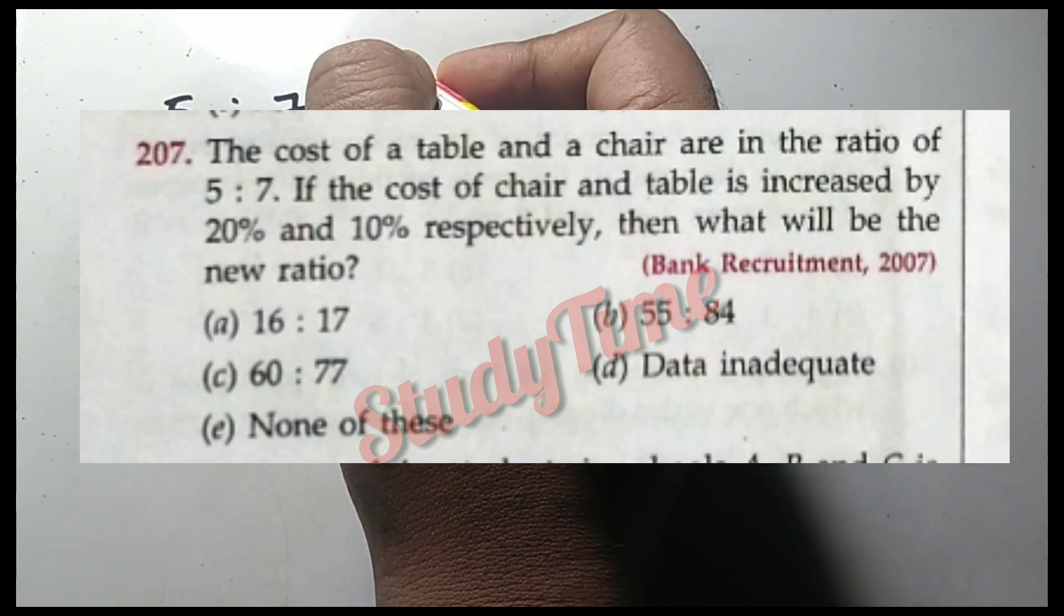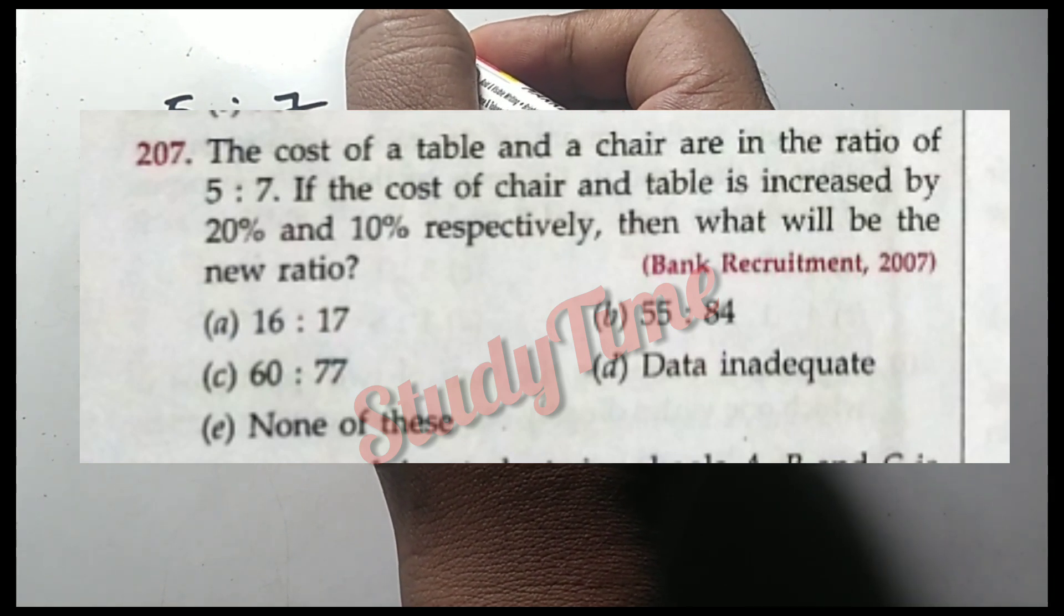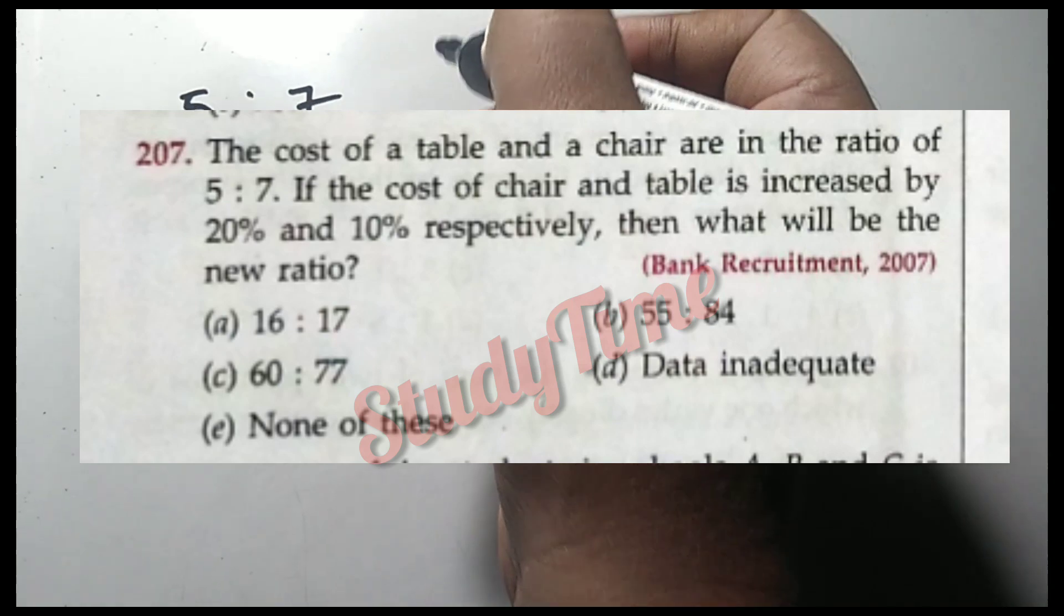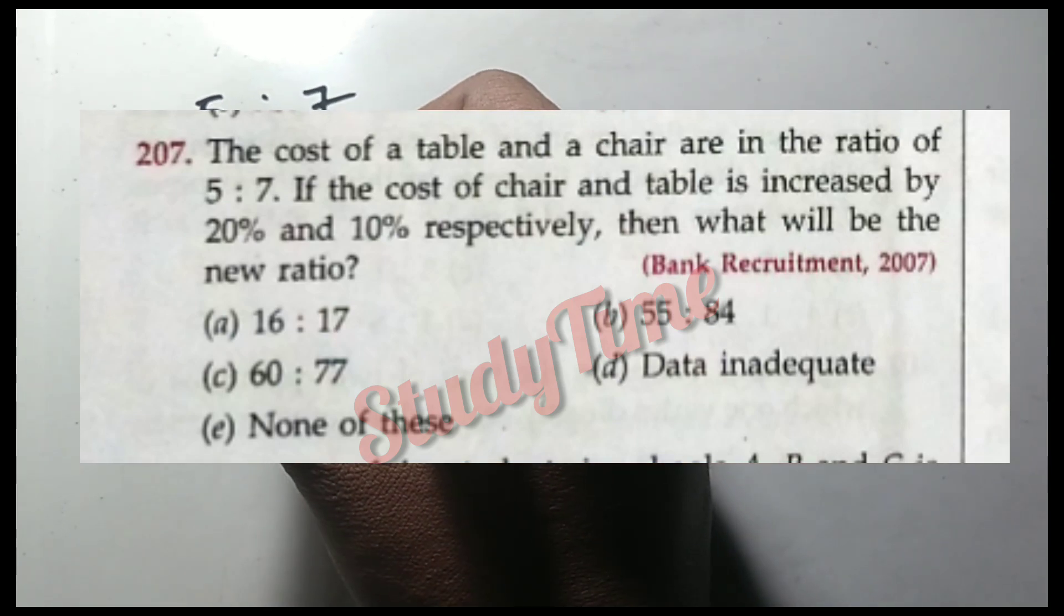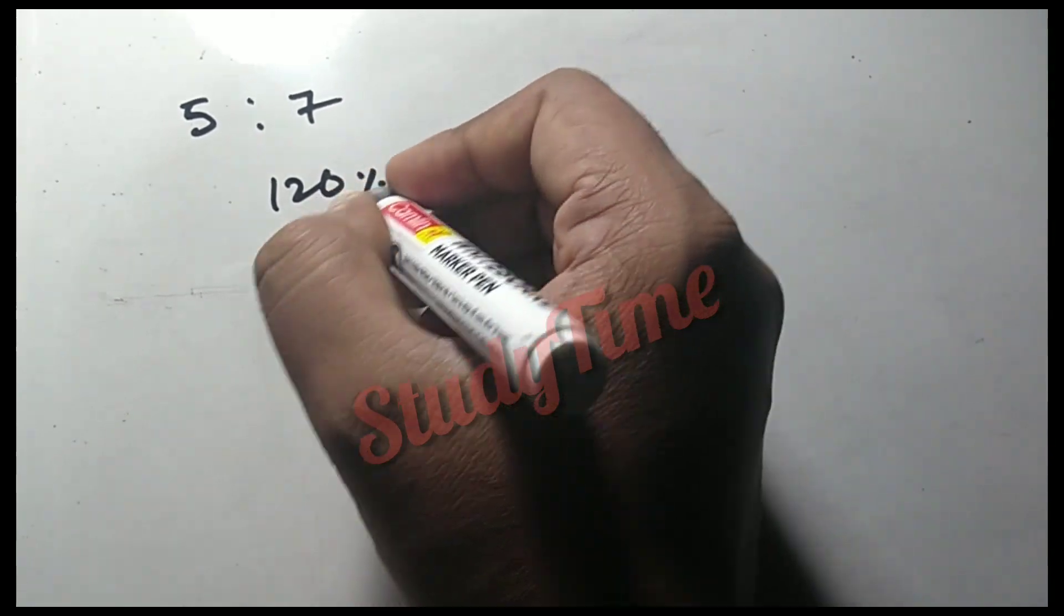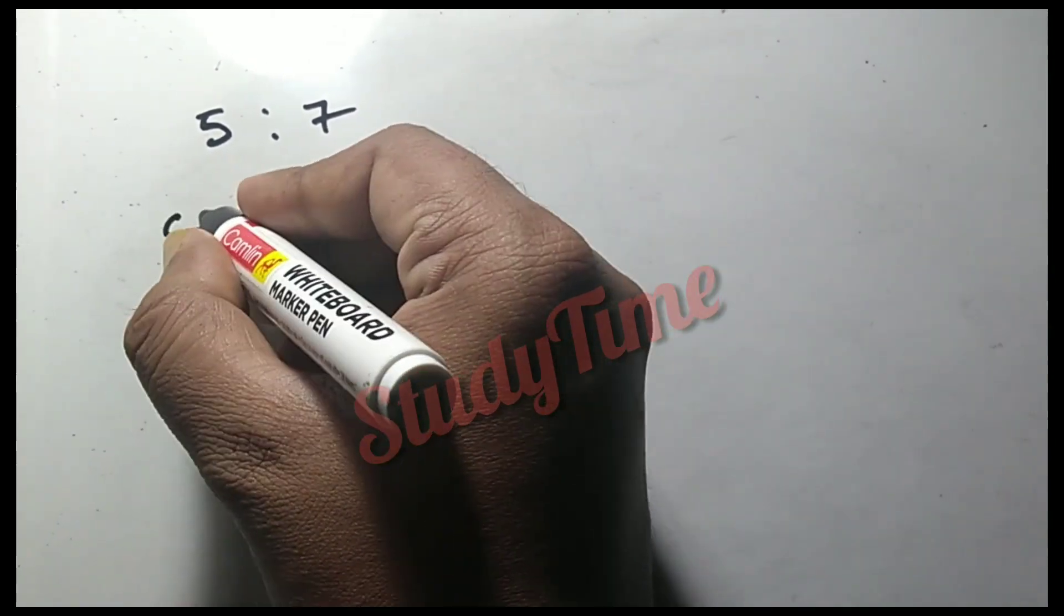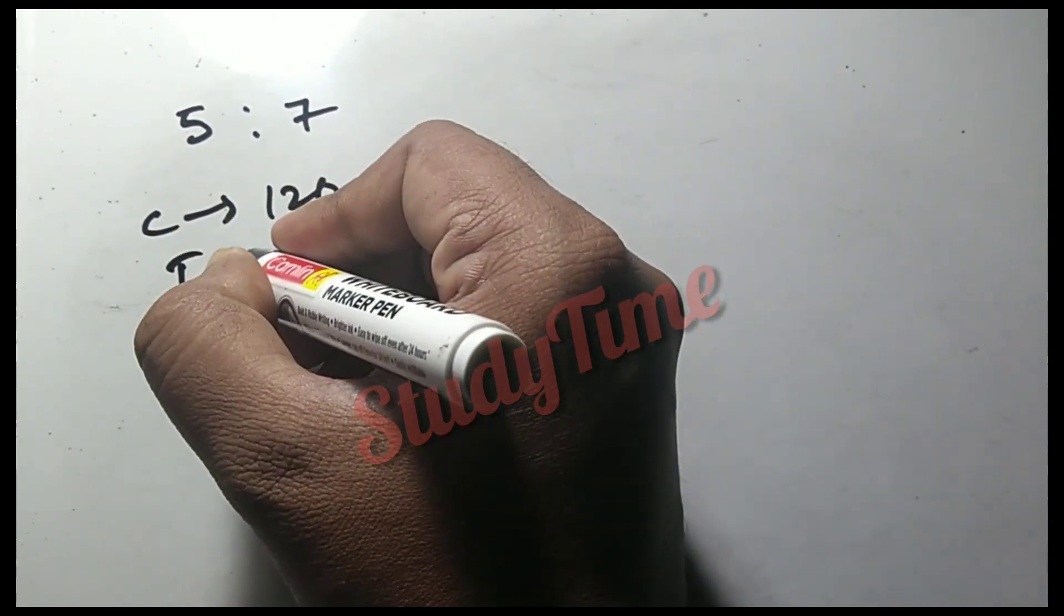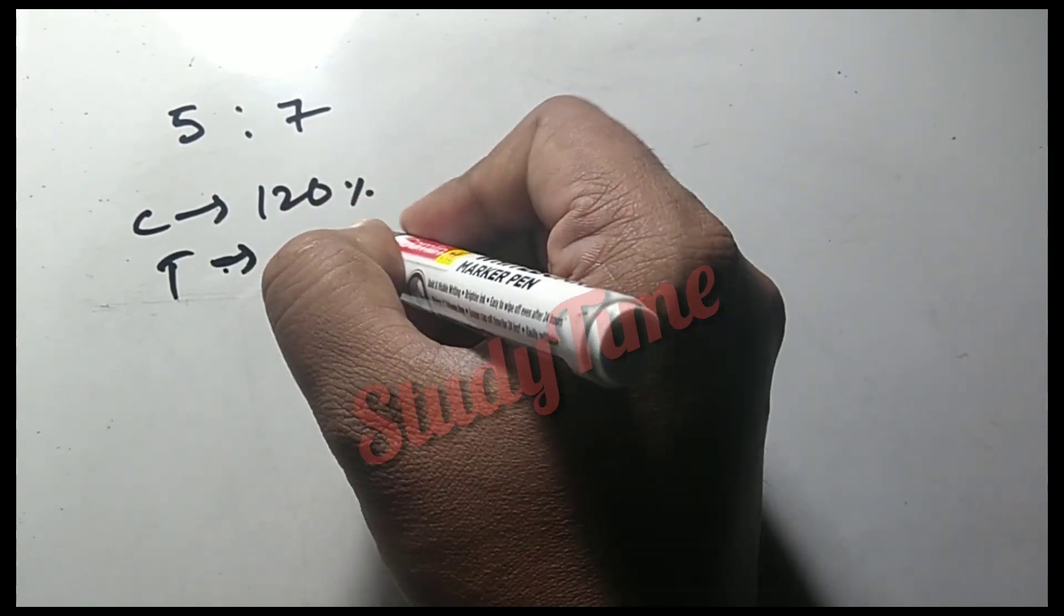If the cost of the chair and table increase by 20% and 10% respectively, then we will get a new cost of 120% for the chair and 110% for the table.